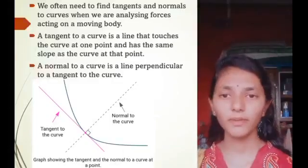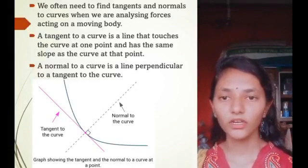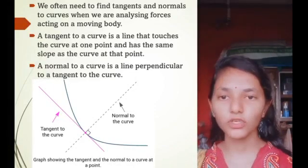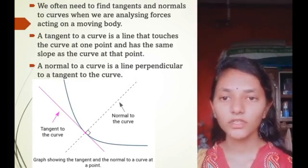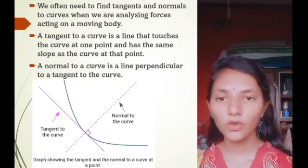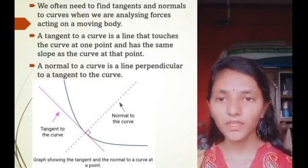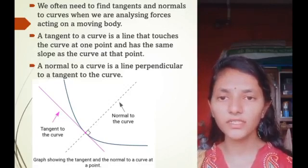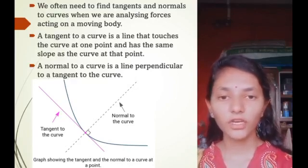Next point of my presentation is why we need to find tangent and normal to a curve when we are analyzing forces acting on a moving body. A tangent to a curve is a line that touches the curve at one point and has the same slope as the curve at that point. A normal to a curve is the line perpendicular to a tangent to the curve as shown in the figure.